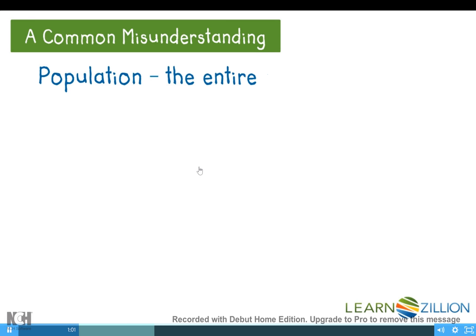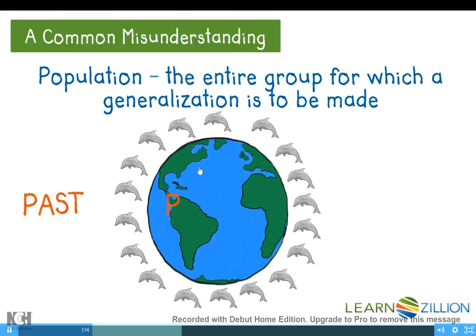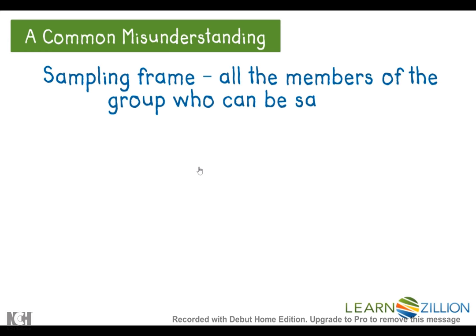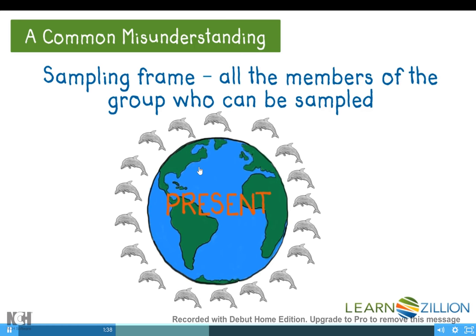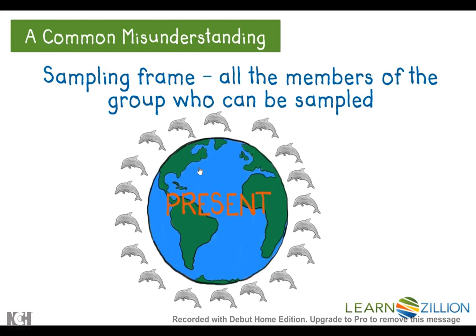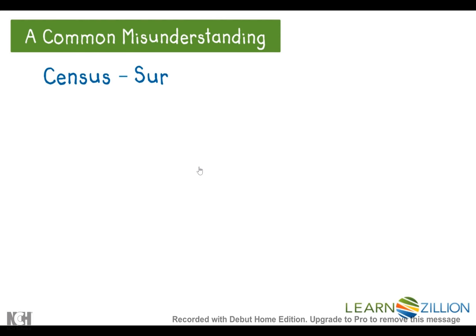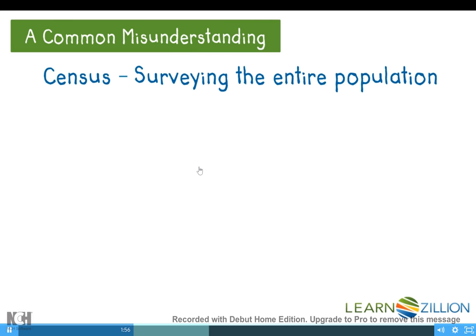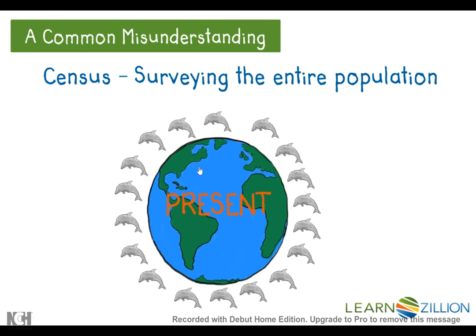The population is the entire group for which a generalization is to be made. Suppose we want to study dolphins — the population is all the dolphins that have ever existed, currently exist, or will ever exist in the future. The sampling frame is all the members of the group who can be sampled — in this case, all dolphins that currently exist, probably limited to a certain geographic location. A census is when we survey the entire population, which would be impossible for all dolphins in the world.